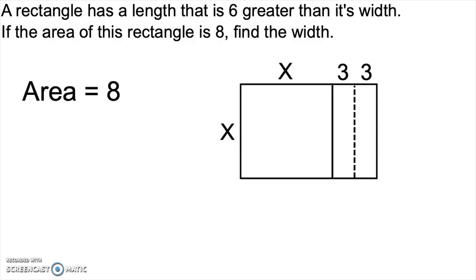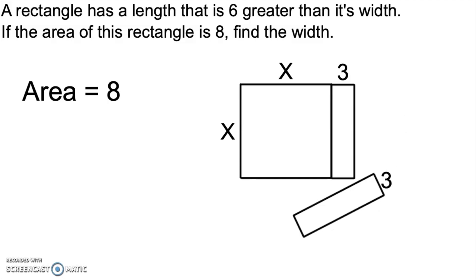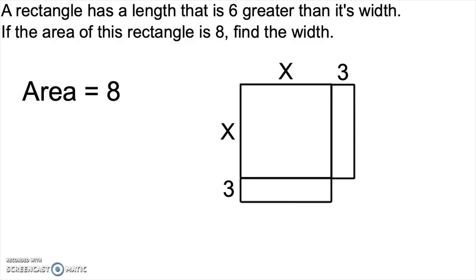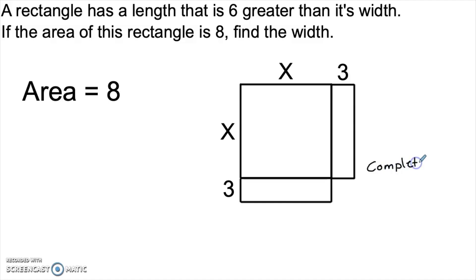Now what I'm going to do is take one of those pieces and break it off, and then I'm going to swing it around to the bottom of the shape. At this point, what we've done is rearrange the pieces of the original rectangle into a shape that's almost a square. We have this side is x plus 3, this side here is x plus 3, and then we're missing this little piece over here. The important point is that we have not changed the area. Let's remember what the technique is called — completing the square.